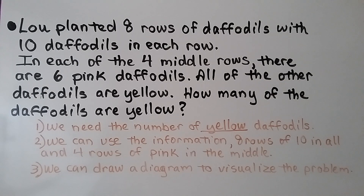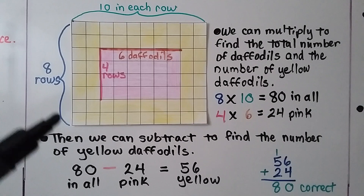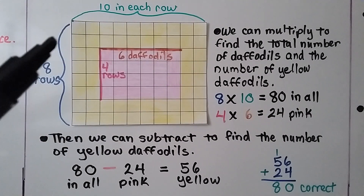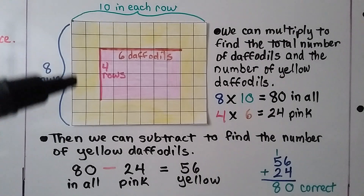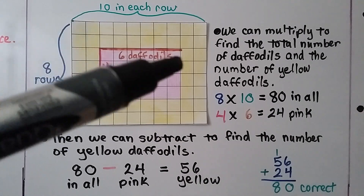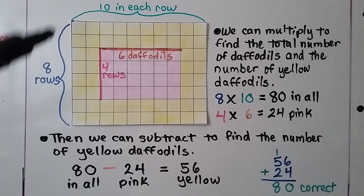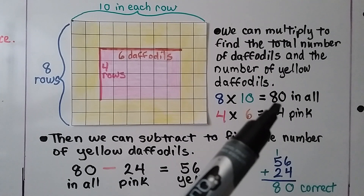We can draw a diagram to visualize the problem. Here we used grid paper to visualize the problem and draw a diagram. We know there are eight rows with ten in each row, and it told us that in each of the four middle rows there are six pink in each of those four rows. We can multiply to find the total number of daffodils. To find how many in all, we do eight times ten — there are 80 daffodils in all.